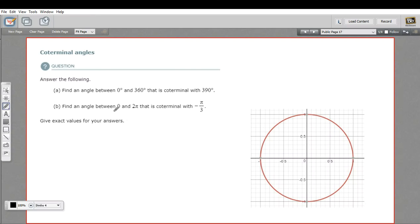In this problem, we're being asked to find coterminal angles. What is a coterminal angle? Co means together and terminal means ending.